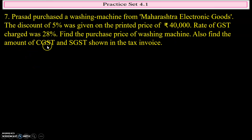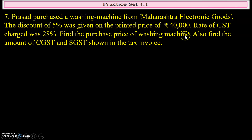Here, Prasad is going to buy a washing machine. The price printed on it is ₹40,000. A discount of 5 percent is given, meaning on this ₹40,000 a discount will be given. After that, on the discounted price he has to pay the GST. The discounted price plus the tax will be the purchase price.